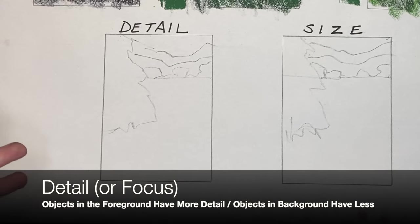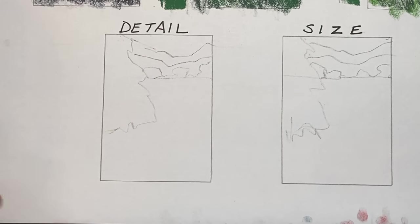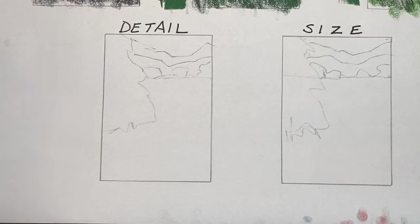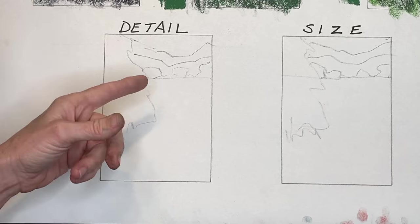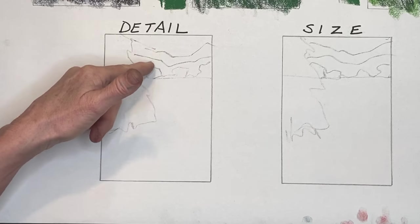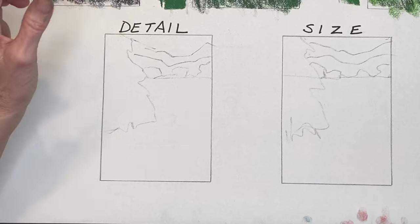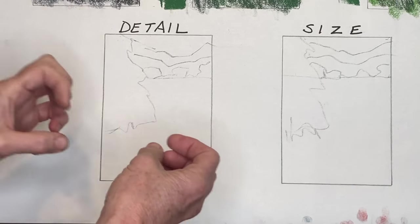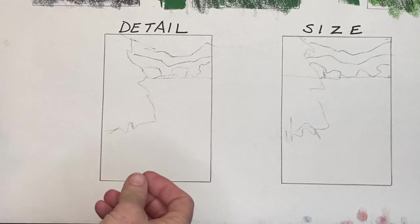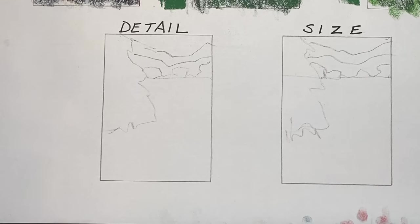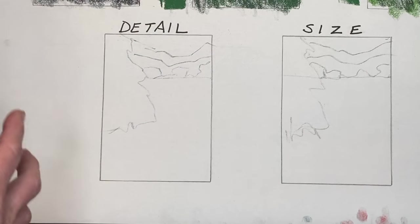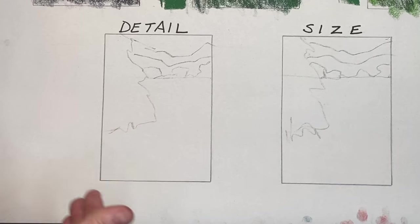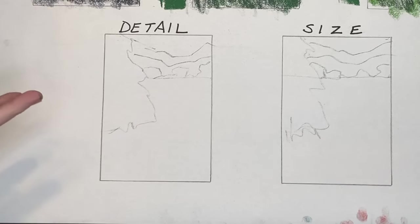Now let's talk about detail. This one might be pretty self-explanatory, but I'm actually surprised — even as a beginning artist myself — at how often I see artists follow a photograph and create too much detail in the distance. The reason photographs do that is because of automatic aperture settings that capture detail all over. Just like with temperature, color, and value, we can push these things further than a photograph and create a more artistic and beautiful painting.